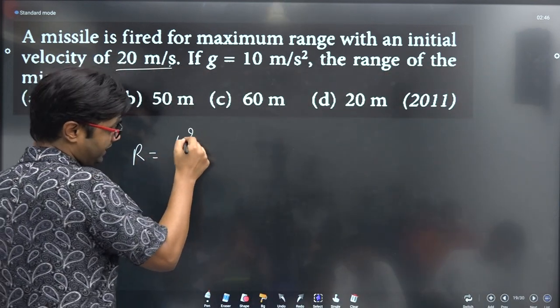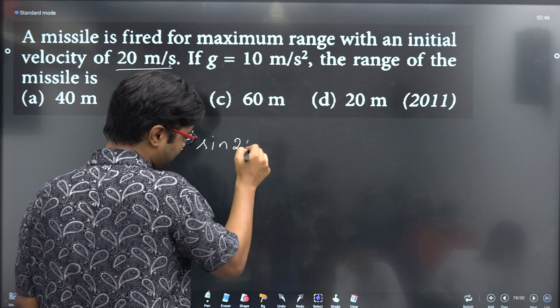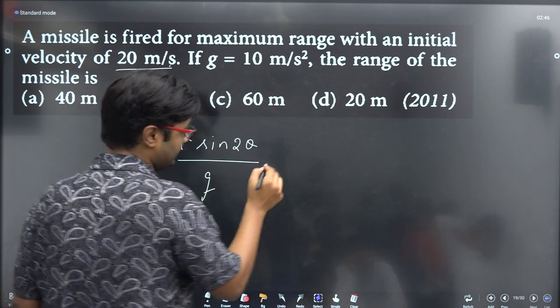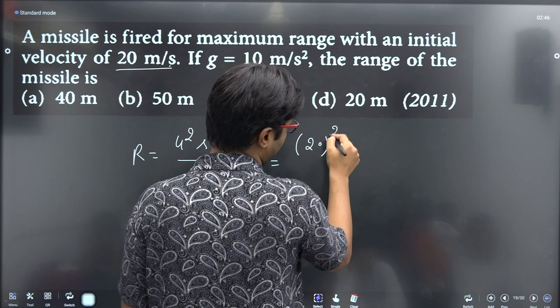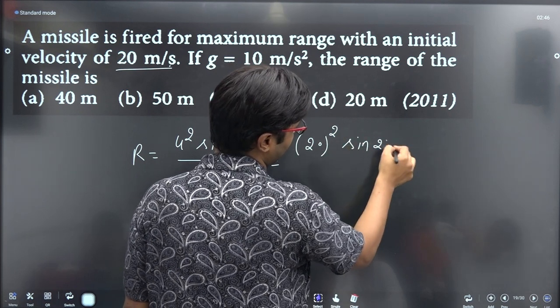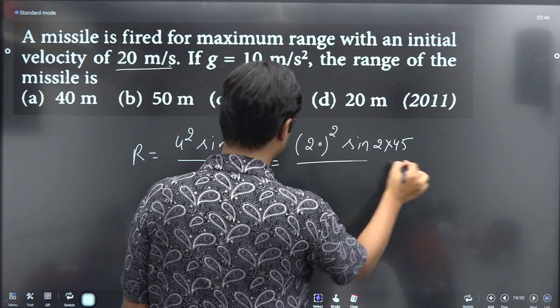Range equals u squared sin 2 theta divided by g. So R equals 20 squared times sin 2 times 45 divided by 10.